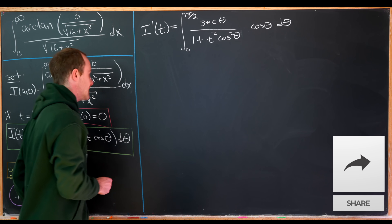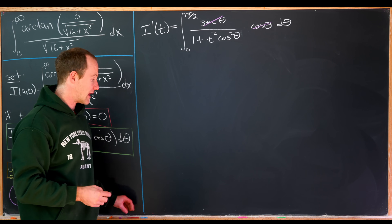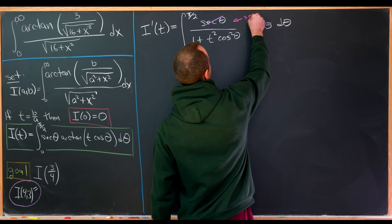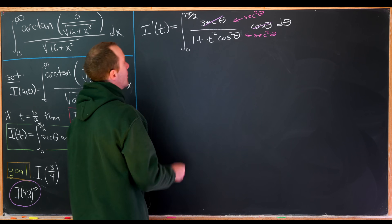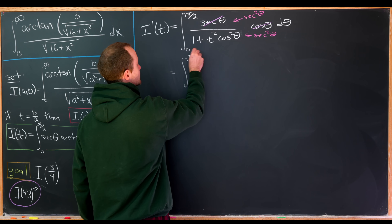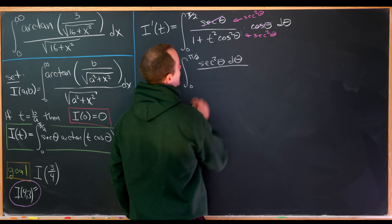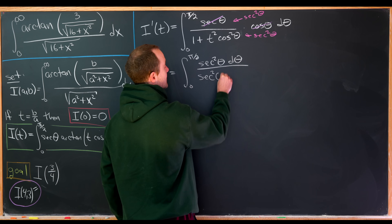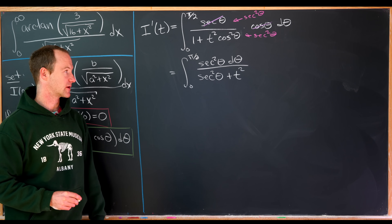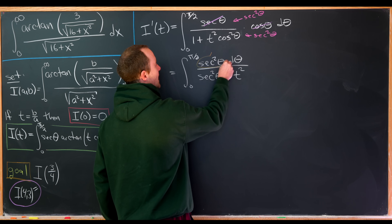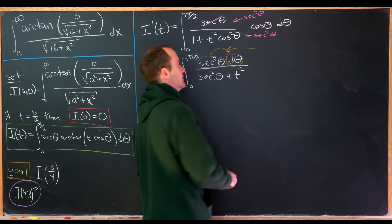The cosine theta and secant theta cancel each other. Multiplying the numerator and denominator by secant squared theta leaves us with the integral from 0 to pi over 2 of secant squared theta d theta over secant squared theta plus t squared. Now I'm motivated to simplify secant squared theta d theta into d of something, so let's make the substitution y equals tangent of theta, so that d y equals secant squared theta d theta.